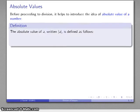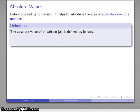Let's talk about division of integers. Before proceeding, it's helpful to introduce the idea of absolute value of a number. The absolute value of a, written with a placed between vertical bars, is defined as follows: if a is greater than or equal to zero, the absolute value is just the number itself.